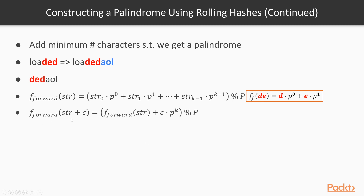We can write f_forward of a string plus a character as f_forward of that string plus c times p to the power of k. You can see that if we plug this in, it's correct — if we have another character, we will have another plus that character multiplied by lowercase p to the power of k, and everything taken mod capital P. So this recursive definition holds.